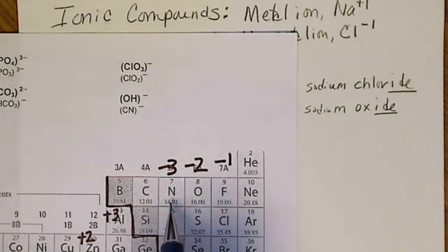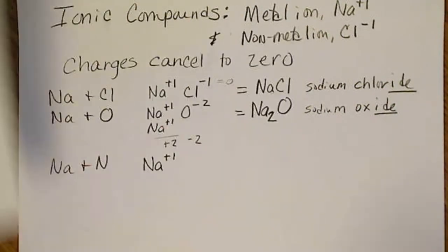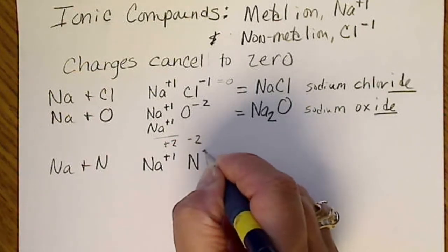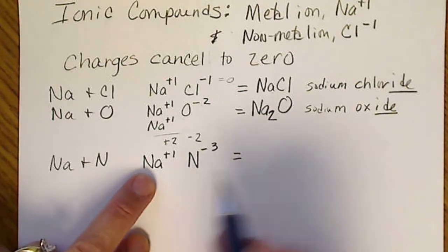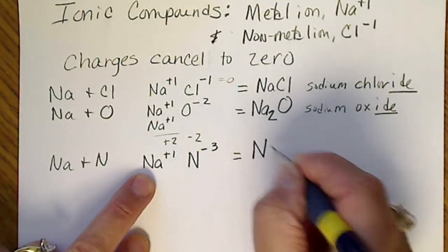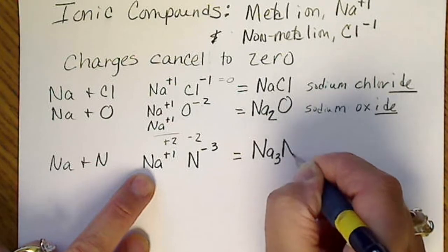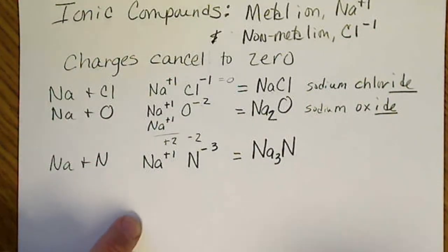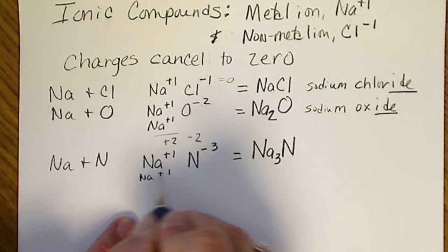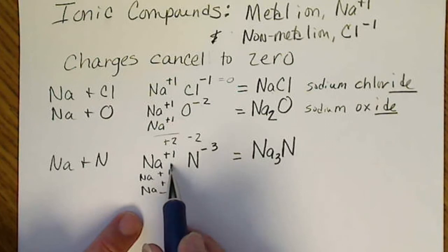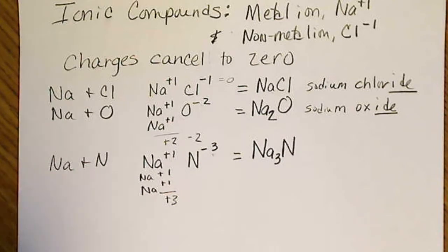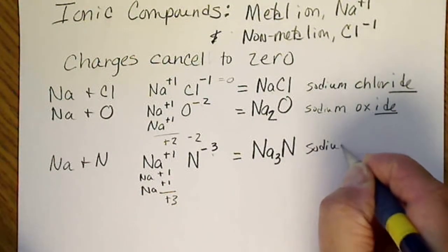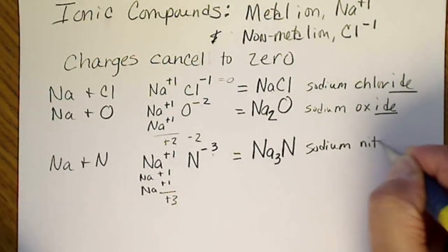Sodium's a plus 1. We look for nitrogen. Nitrogen is in the minus 3 column. So the charge on the N will be minus 3, and we may be able to just tell by looking. We need 3 sodiums for every 1 nitrogen, Na3N. So this formula may look strange, but again, that's because we need 3 of these positive 1 charges. So we have a net charge of plus 3 from 3 sodiums, and then that cancels the minus 3. And the name of this is sodium nitride.